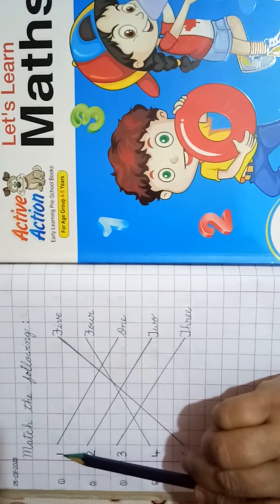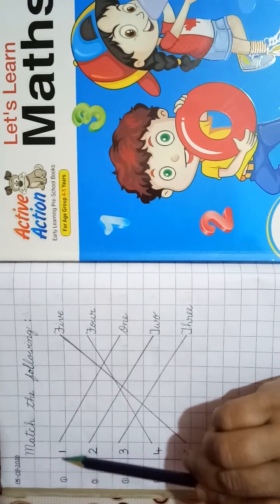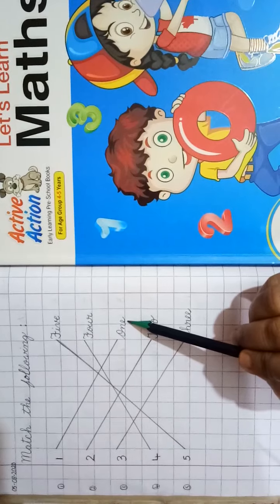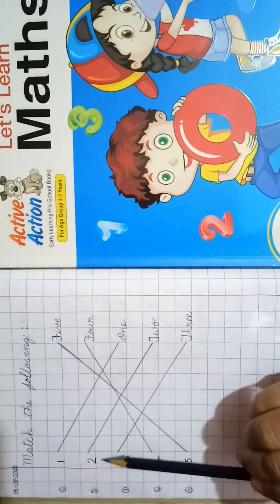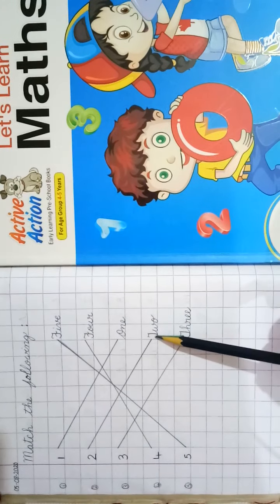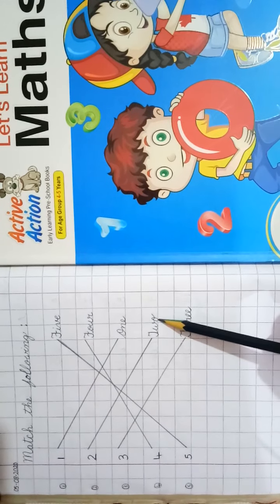Now, number 1, we will match number 1 with the number name O-N-E 1. Number 2, we will match with number name T-W-O 2.